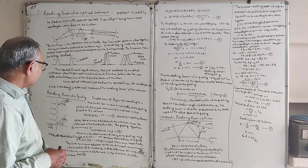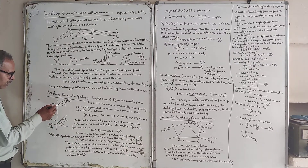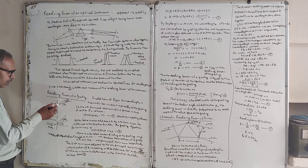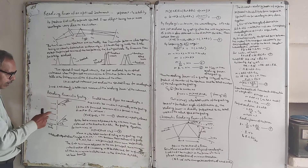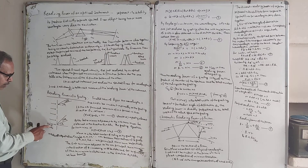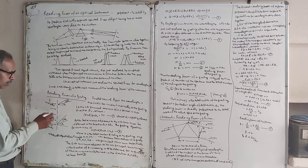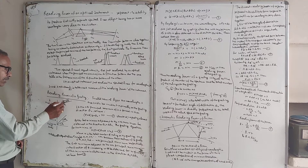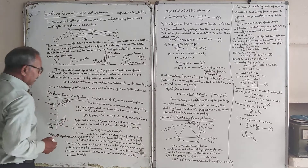Now, resolving power of a grating. We have a grating with grating element e plus d, where e is the slit width and d is the opaque portion. The total distance of one element is e plus d. We have two waves with different wavelengths lambda and lambda plus d-lambda. The angle for lambda is theta-n and for lambda plus d-lambda is theta-n plus d-theta-n.